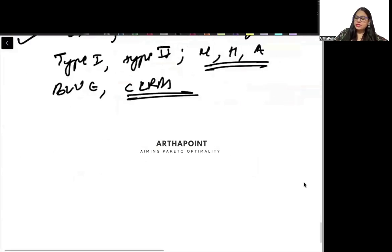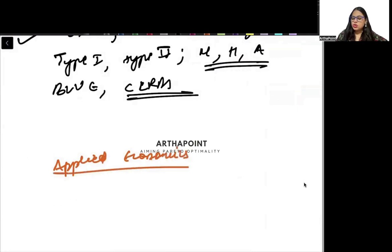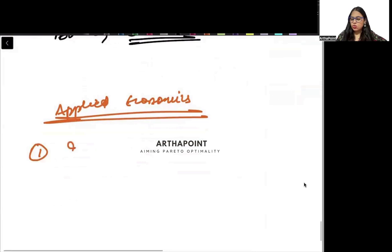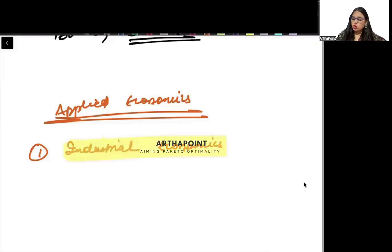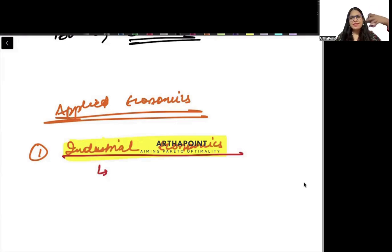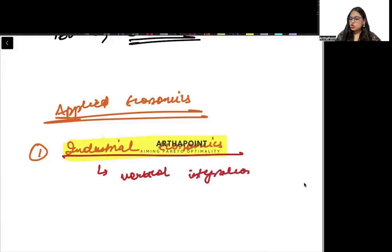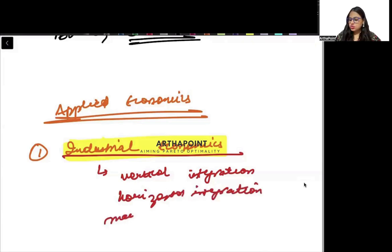Now let's talk about Applied Economics. The first major area is Industrial Economics. In industrial economics, you need to study the different forms of industries — product differentiation, economies of scale, market structures, vertical integration, horizontal integration, mergers, and innovation.